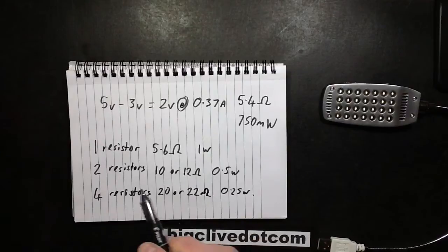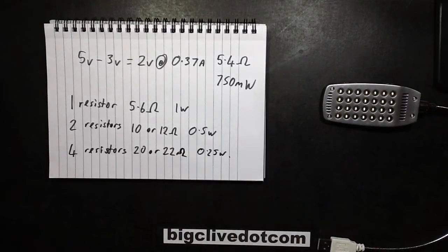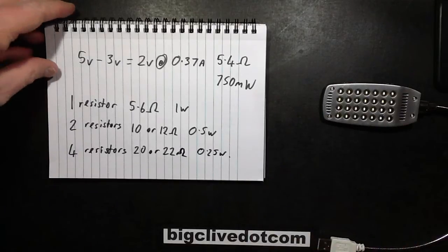So what's it going to be? Is it going to be one resistor, two resistors, or four resistors? What do you reckon? Let's open this up shall we?